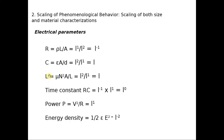Next, inductance: L equals mu N squared A divided by length, where mu is the permeability, N is the number of turns, A is the area of cross section, and length is the length of the coil. Area is proportional to L squared and length is proportional to L, giving L squared over L, which is L — a directly proportional relation. If you reduce the size by some factor, inductance also reduces by the same amount.